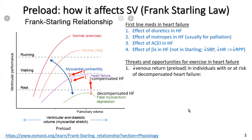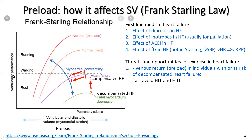We now come to threats and opportunities for people exercising in heart failure. We want to keep control over preload and not have too much preload in individuals with or at risk of decompensated heart failure. To do that we should avoid high intensity training and high intensity interval training — they should not be applied to someone at risk of decompensated heart failure, because they will push someone to the right and over the tipping point for both pulmonary edema and very poor stroke performance.